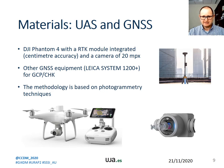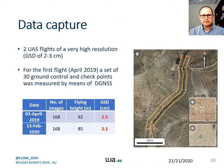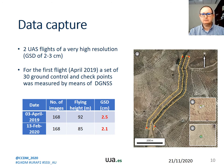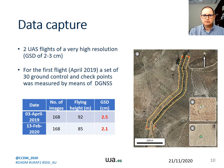The methodology starts with the data capture. The data capture was made by means of two UAS flights of very high resolution with a ground sample distance of 2–3 cm. For the first flight, on April 2019, a set of 30 ground control points and checkpoints were measured by means of differential GNSS.